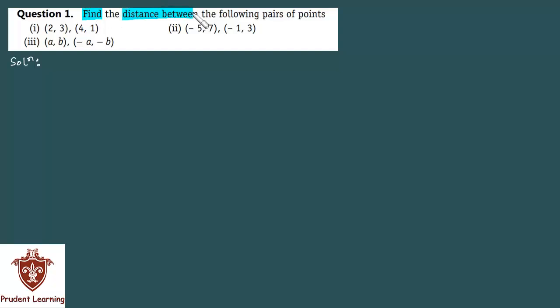Find the distance between the following pairs of points. In this question, you are given the coordinates of two points and you need to find the distance between them. Let's see the solution. In the first section, the given points are 2,3 and 4,1.